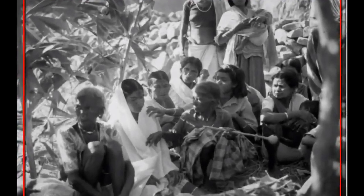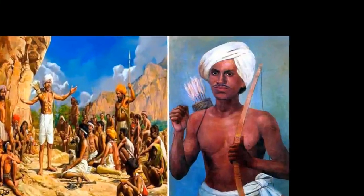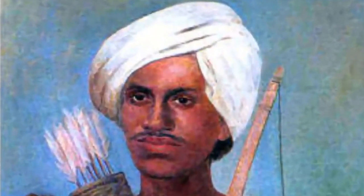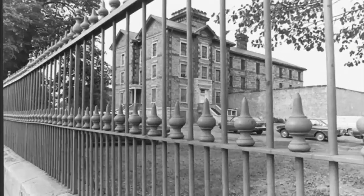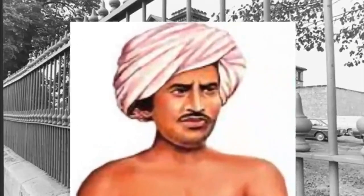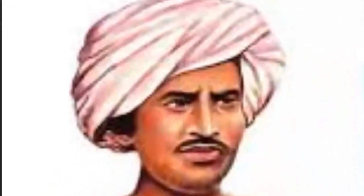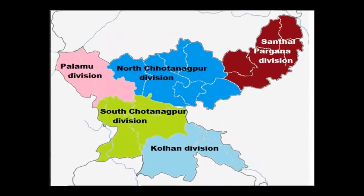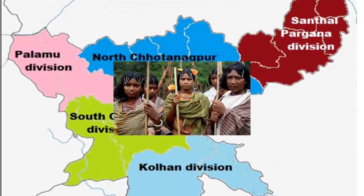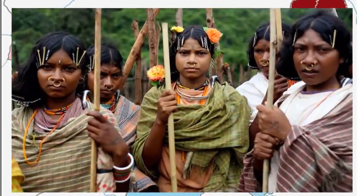The Munda leaders utilized the cult of Birsa Munda to recruit more people to their cause. Finally, the resistance was crushed and Birsa Munda was arrested in February 1900, and later died in jail. The Chota Nagpur Tenancy Act subsequently restricted the entry of non-tribal people into tribal lands.